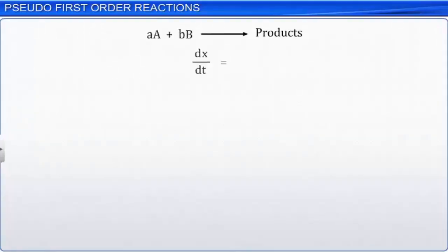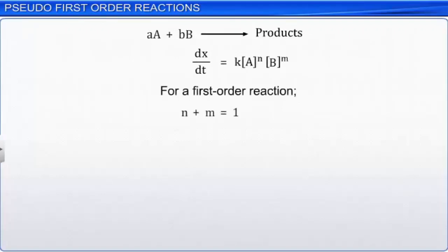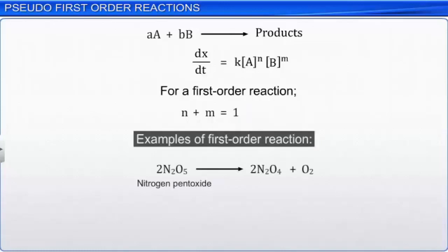For a first-order reaction, the sum of the powers of the concentration terms in the rate law expression is equal to 1. The decomposition of nitrogen pentoxide and nitrous oxide are examples of first-order reactions.